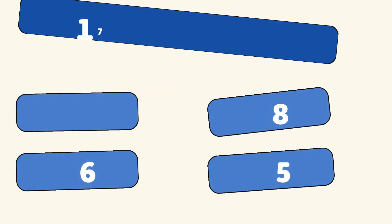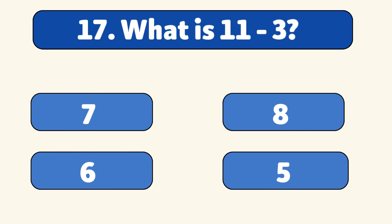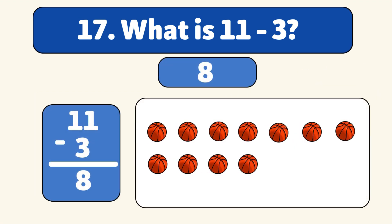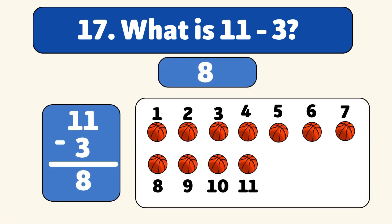What is 11 minus 3? The answer is 8. We start with 11 basketballs and take away 3. Let's count: 1, 2, 3. We have 8 basketballs left.